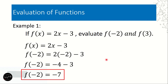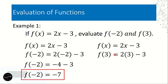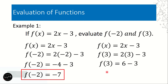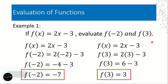For the second solution, f(3) = 2 times 3 minus 3. That will be 2 multiplied by 3, which is 6, then minus 3. So 6 minus 3 is 3. If x is 3, the value of y is also 3.